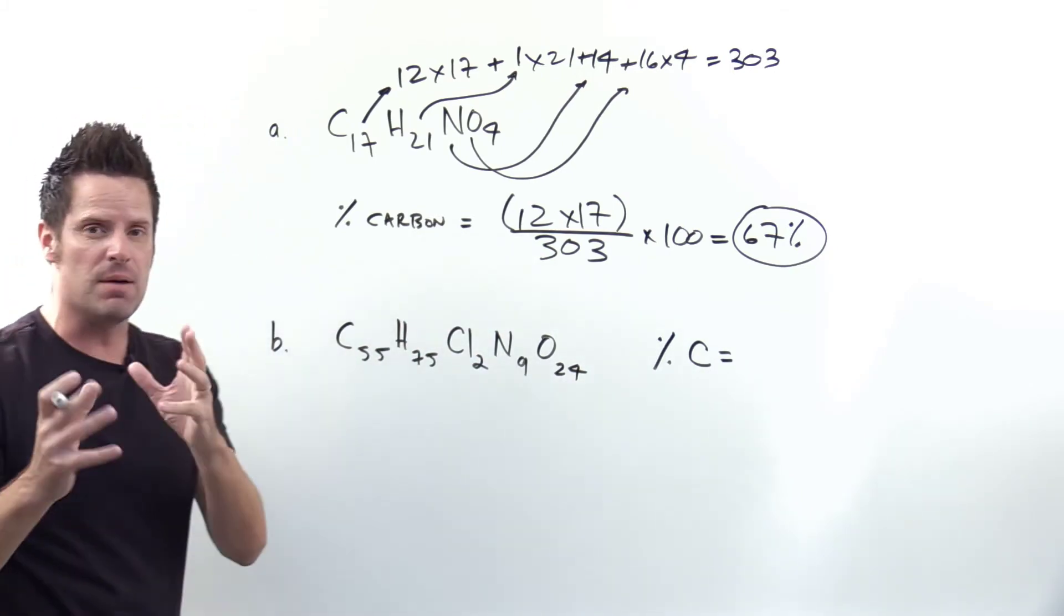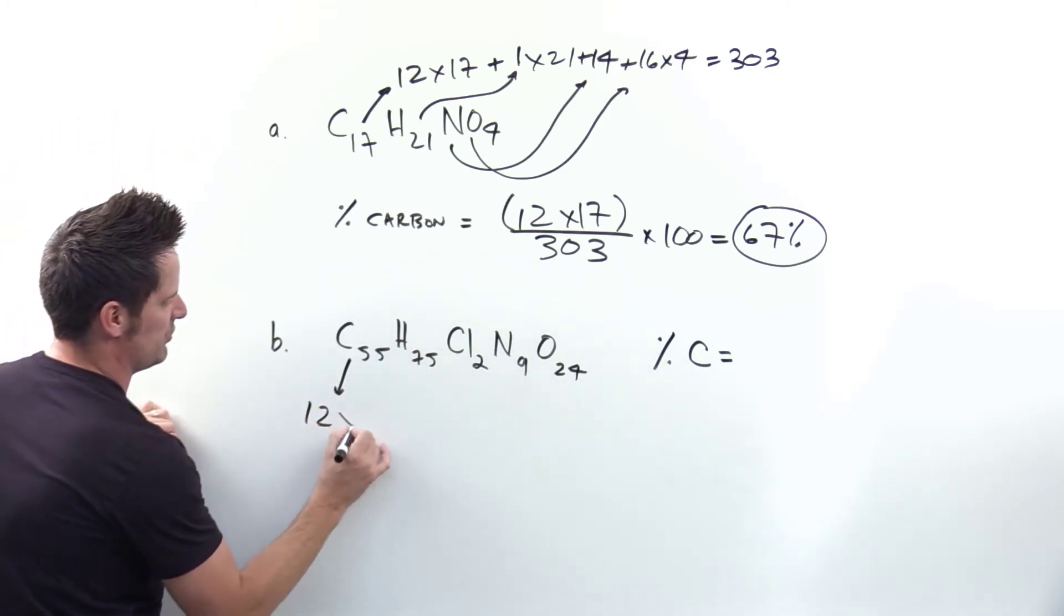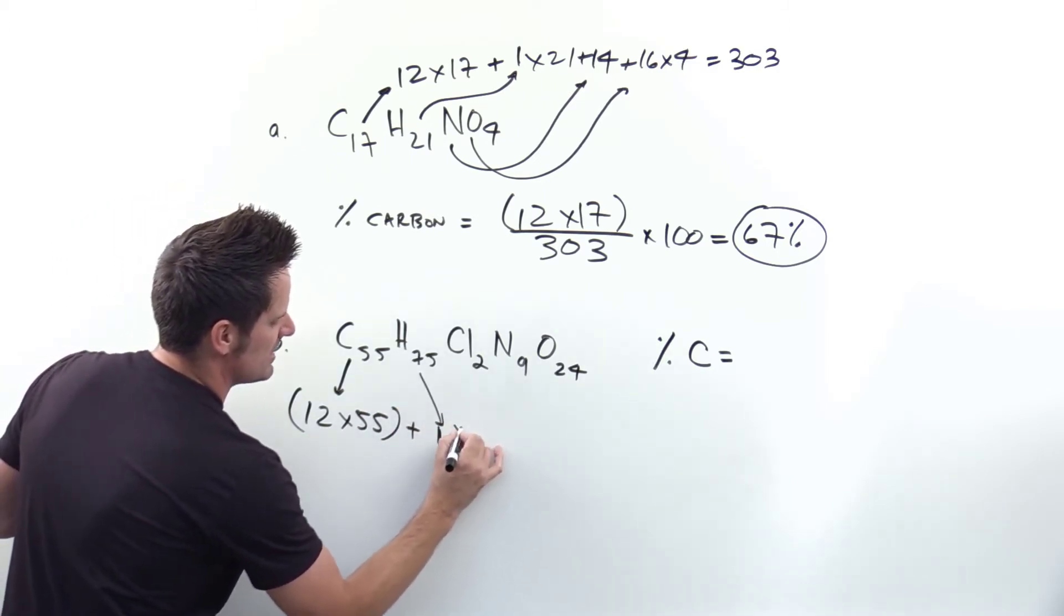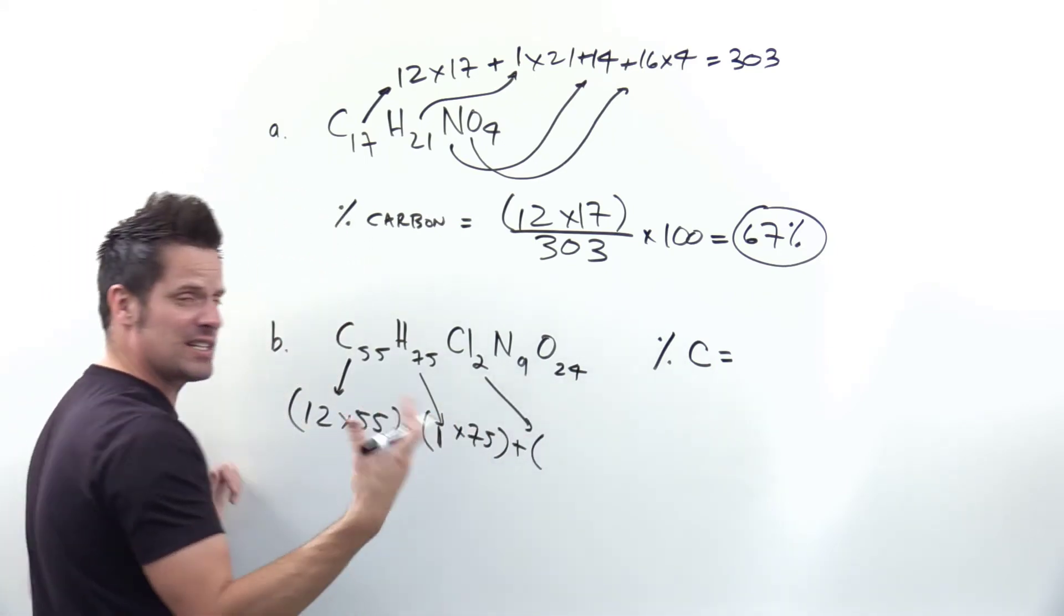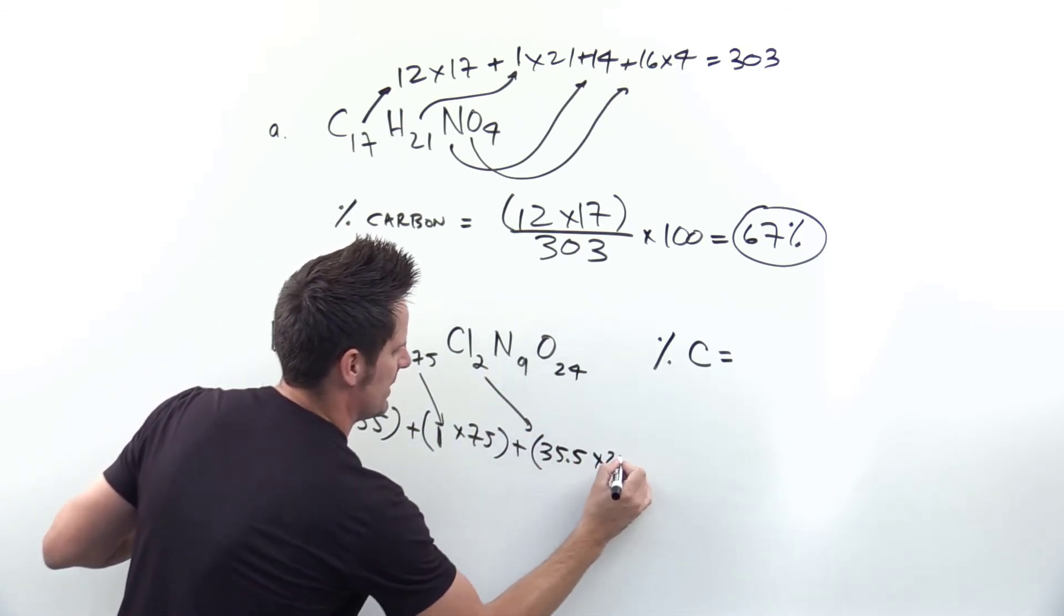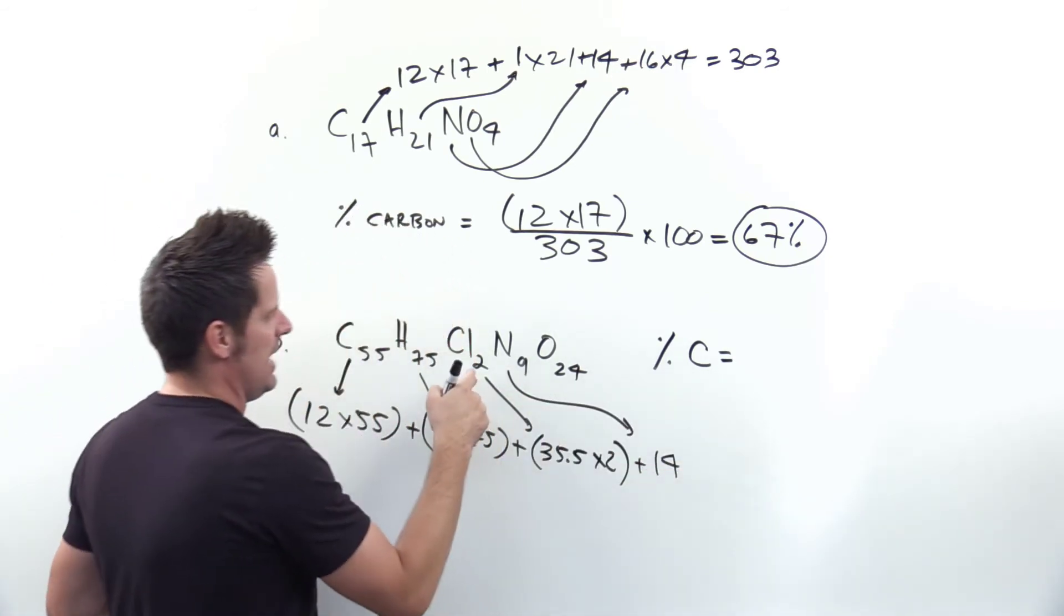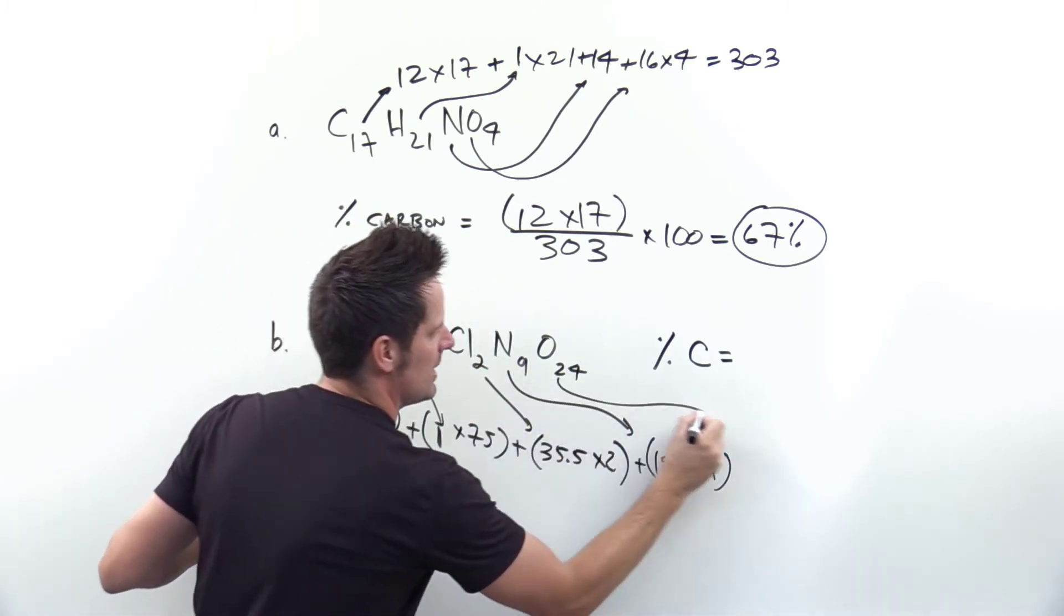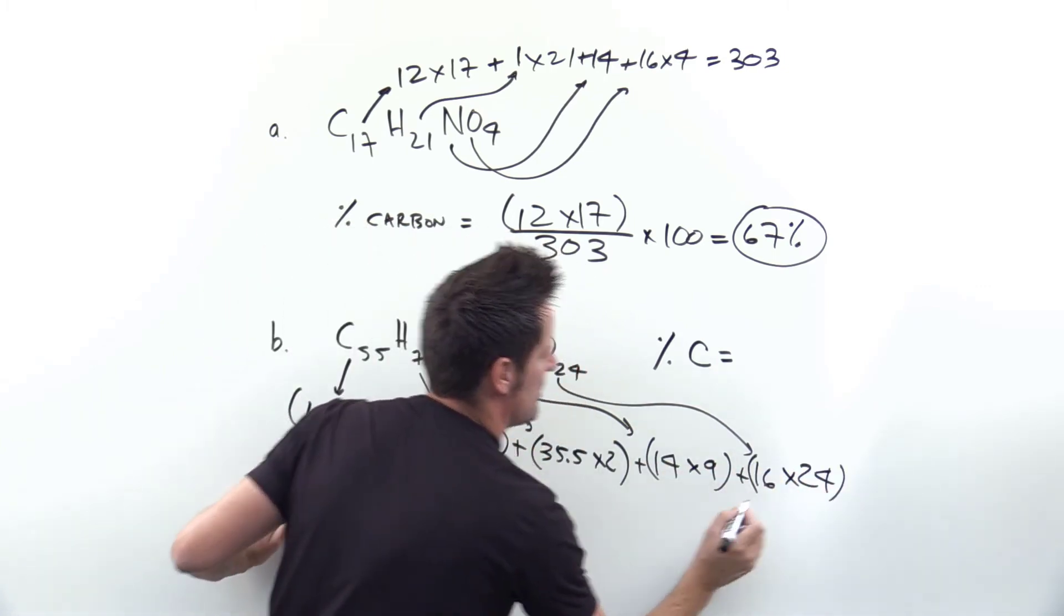All right now let's do the same thing down here for vancomycin, a very important antibiotic reagent. So the total mass we're going to get here is going to be 12 times 55, 55 carbon atoms in this thing. And then one because each hydrogen weighs one, times 75. And then we're going to add to that each chlorine, if you look at the atomic weight on the periodic table, is about 35.5 times that by 2 because there are two chlorine atoms in this formula. Each nitrogen weighs about 14, and I'm going to times that by 9 because there are 9 nitrogen atoms in each molecule. And then each oxygen weighs 16, so I'm going to times that by 24 because there are 24 oxygen atoms in this formula.